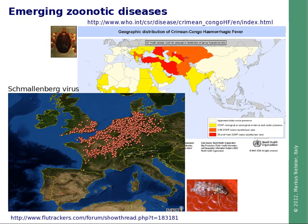These maps show two examples: the Crimean-Congo hemorrhagic fever and the Schmallenberg virus, which recently appeared in parts of Europe. The Schmallenberg virus causes, in mild form, fever of short duration and reduced milk production in cows, and in severe form, stillbirth and birth defects in sheep, cattle and goats. It is transmitted by Culicoides midges. The Crimean-Congo hemorrhagic fever causes blood-related issues in the human body with 30% fatality and is transmitted by Hyalomma tick bites.